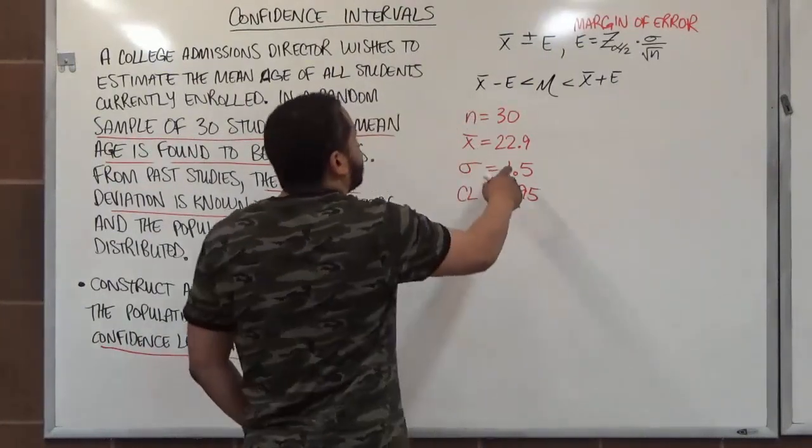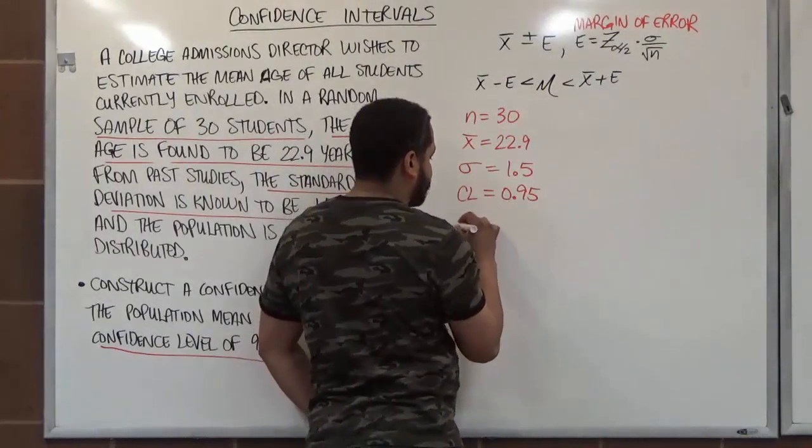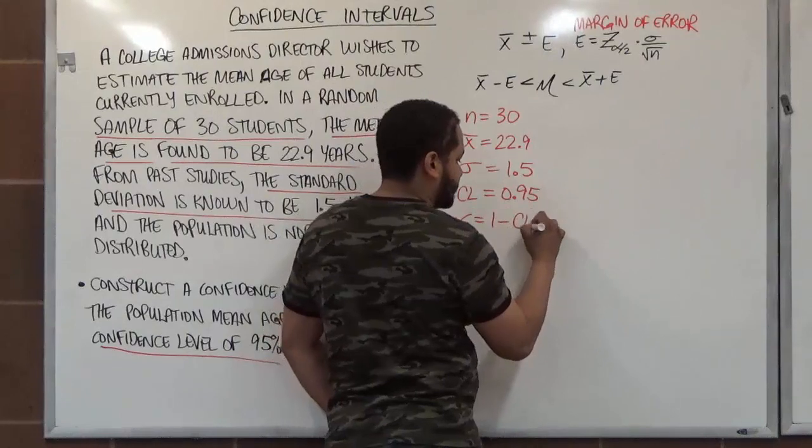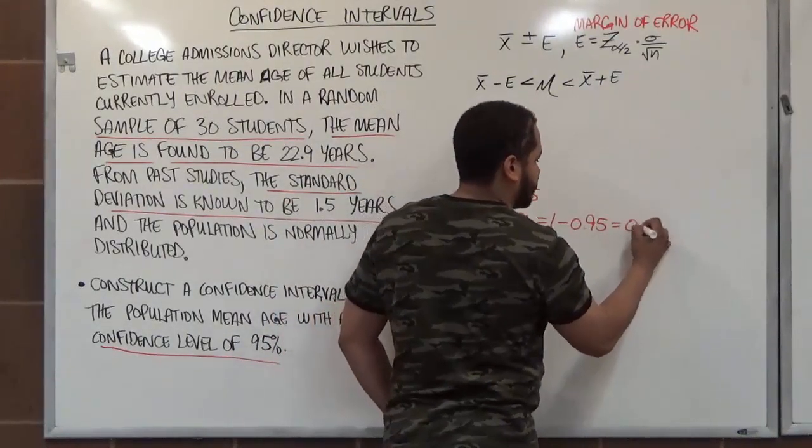And to calculate our alpha to get this z critical, we have to first do 1 minus the confidence level. Because alpha is equal to 1 minus the CL. This is 1 minus 0.95, which gives us 0.05.